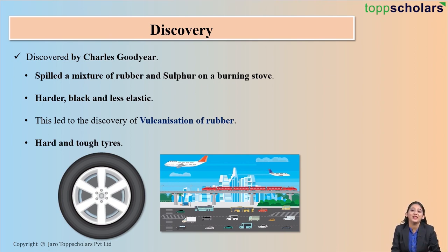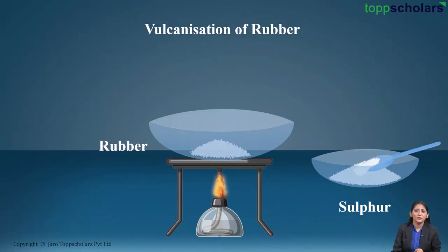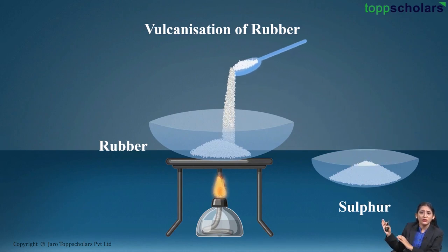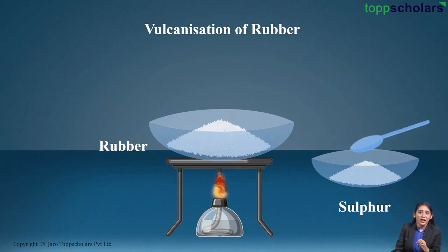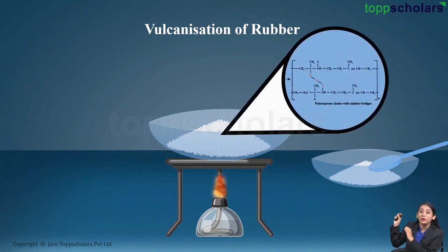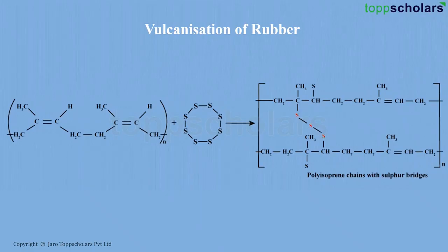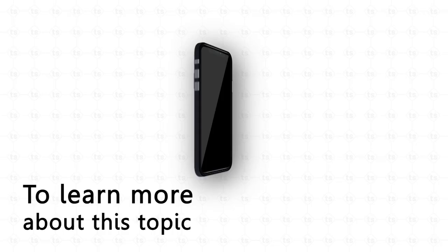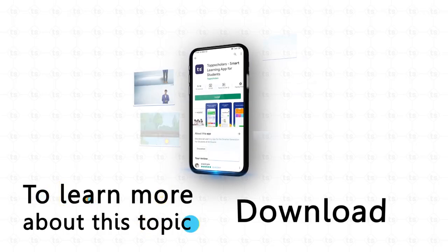But what is this process of vulcanization of rubber? Let's discuss it in detail. In this process, some amount of sulfur is added to rubber. This mixture is heated for about three to four hours. As you can see, due to heating, there is cross-linking of polyisoprene chains through disulfide bonds. These disulfide bonds make the rubber much harder and less elastic.